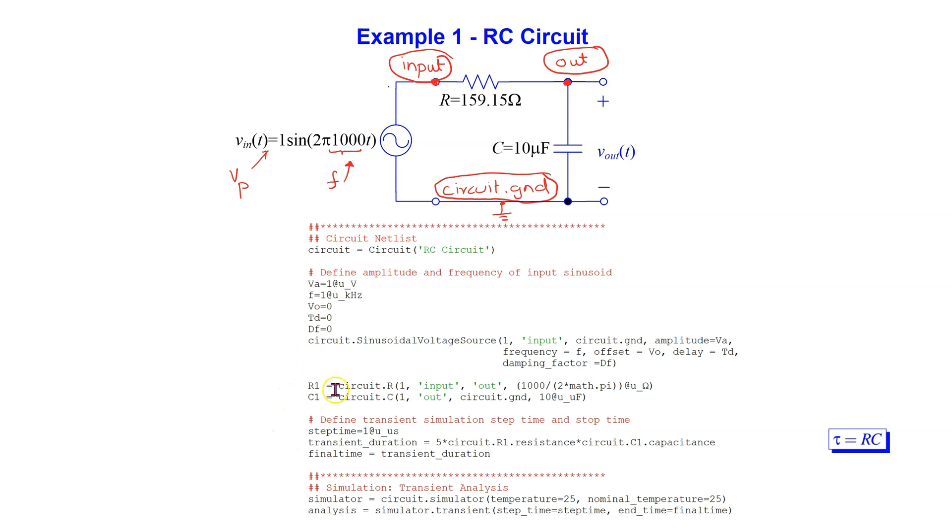It is well known that for an RC circuit, the steady-state response is reached after approximately 5 time constants. We can use this fact to define the final time for the transient simulation. The simulator.transient command simulates the circuit and gives us the total response.